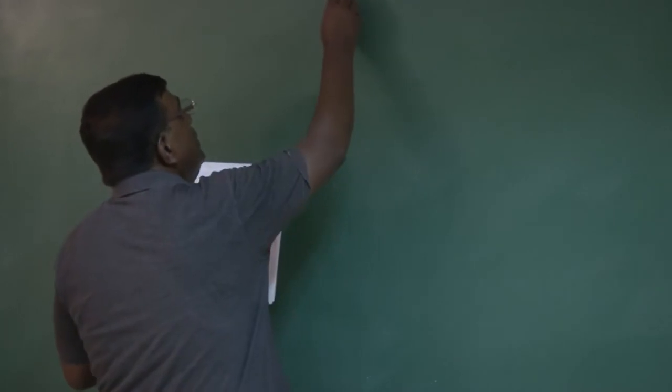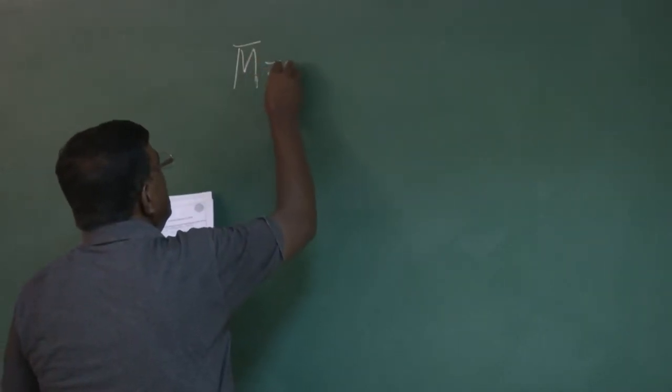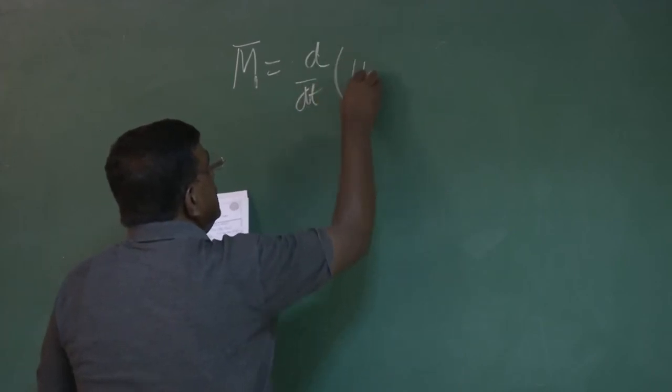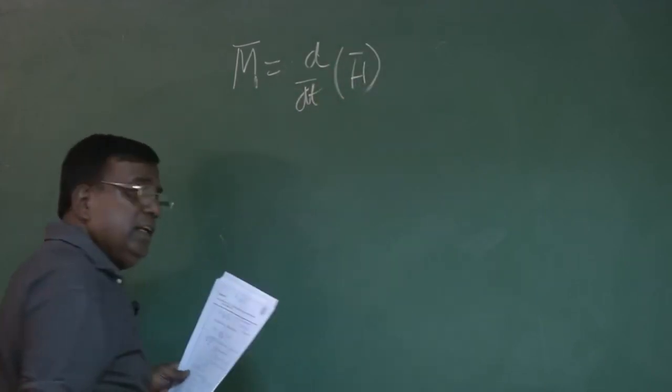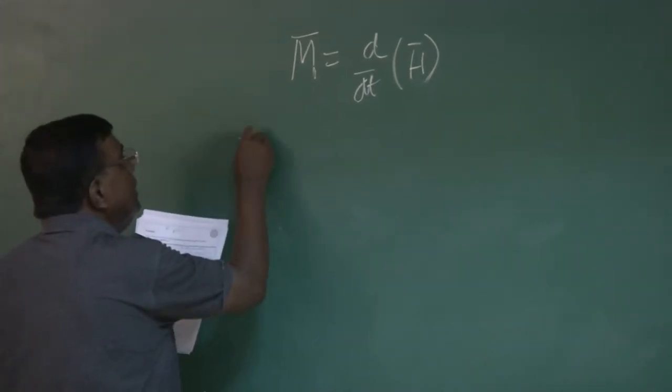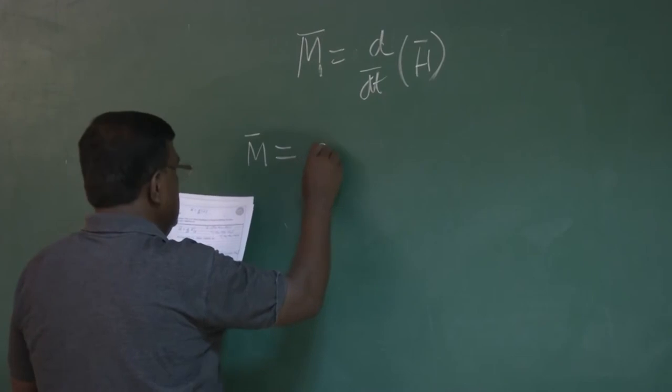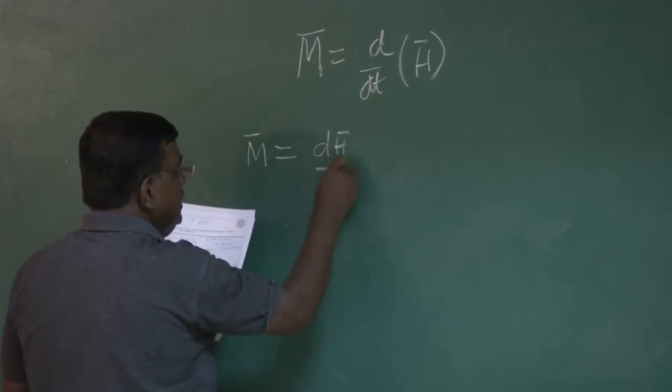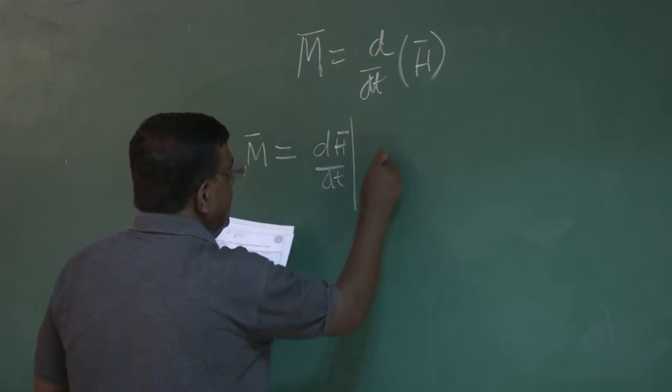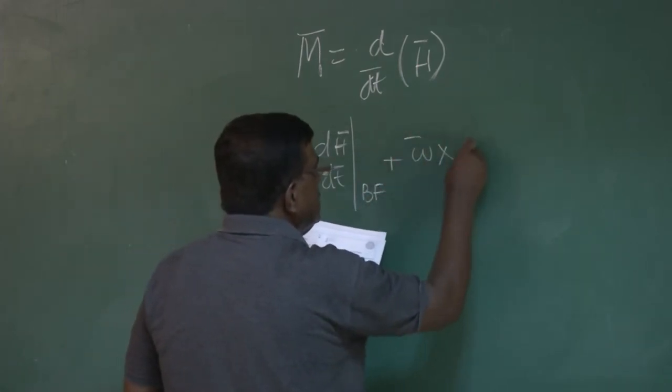As we know, if everything was with respect to initial frame, then this is nothing but we have to operate like this. But since now we are working in rotating frame, so use this concept. M, I can write it as dh/dt evaluated at body frame or rotating frame plus omega cross h.